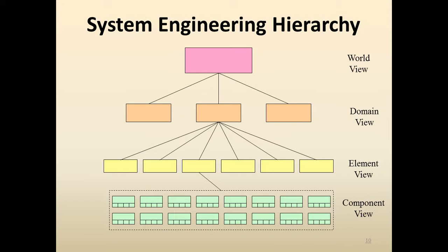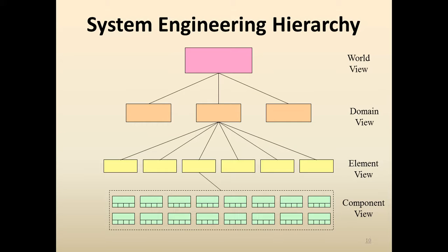In the system engineer hierarchy, the first level is the worldwide view. Then comes the domain view — for example, some applications are business-oriented, some are object-oriented, and some are entertainment-oriented. This is a domain meaning a particular focus on a particular topic. Further, we classify this into the element view. In education, for instance, there is school level and college level, and further we can describe science, arts, and commerce backgrounds. This further classification becomes the component level, which we call the system engineer hierarchy.